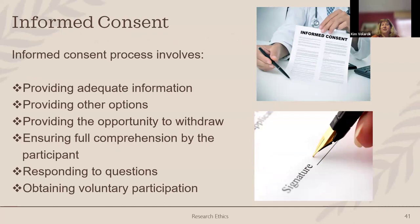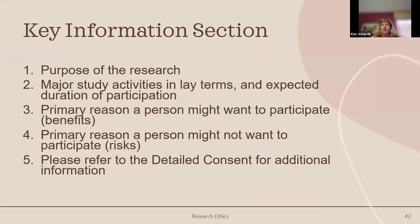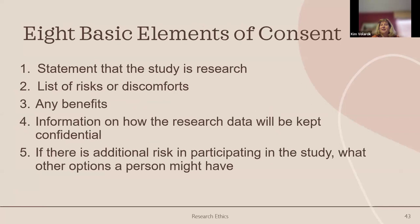With the revised Common Rule, OHRP has introduced a key information section for informed consent forms. The idea is that five key elements placed at the very beginning of a consent form give someone enough information to understand the study and decide whether to participate. After those five elements, participants read the eight elements containing more detailed information about the study.